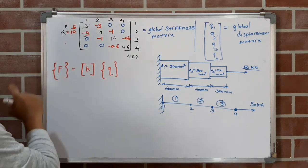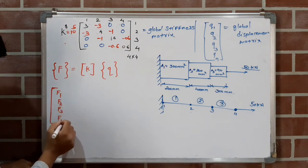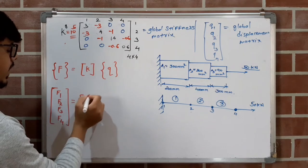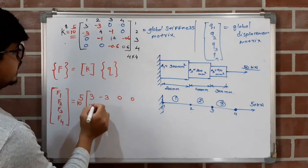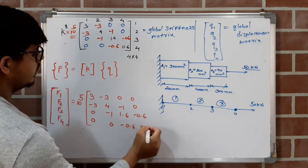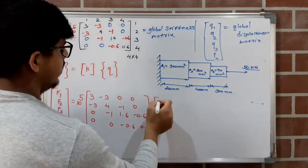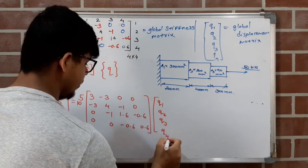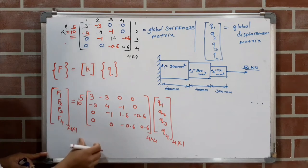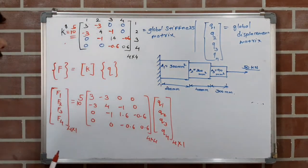Writing the full equation F = K × Q: [f1, f2, f3, f4] = 10⁵ × [3, -3, 0, 0; -3, 4, -1, 0; 0, -1, 1.6, -0.6; 0, 0, -0.6, 0.6] × [q1, q2, q3, q4]ᵀ. This is 4×1 = 4×4 × 4×1, which is dimensionally consistent.